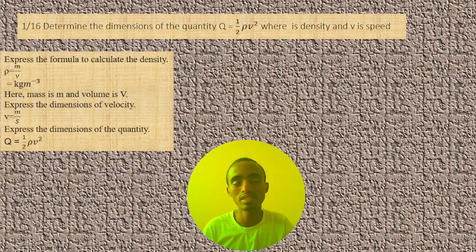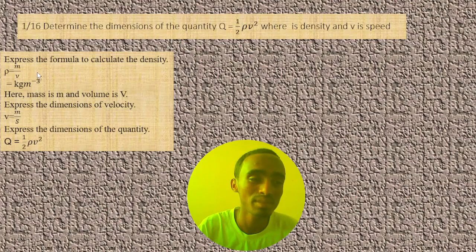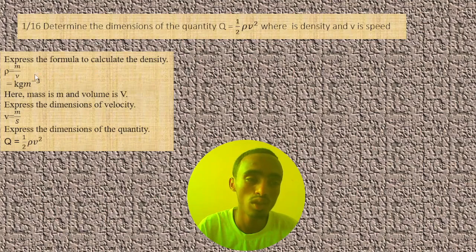Then we can multiply this dimension and get the final answer. Express the formula of density: density equals mass over volume. Mass is measured in kilogram and volume is measured in meter cube.